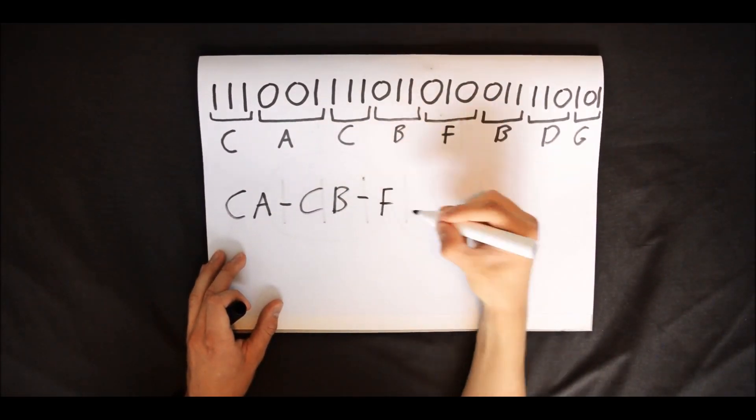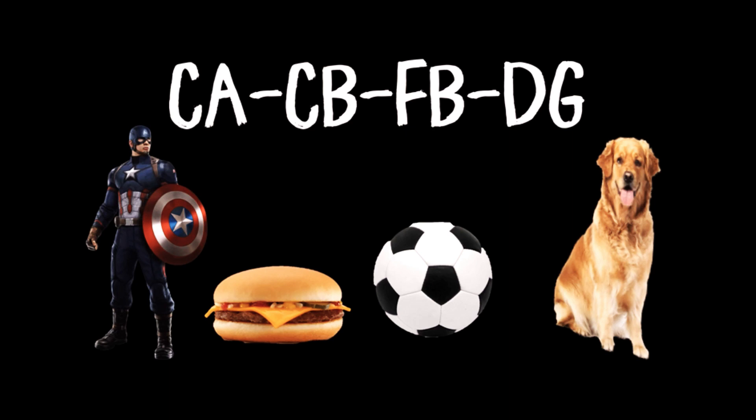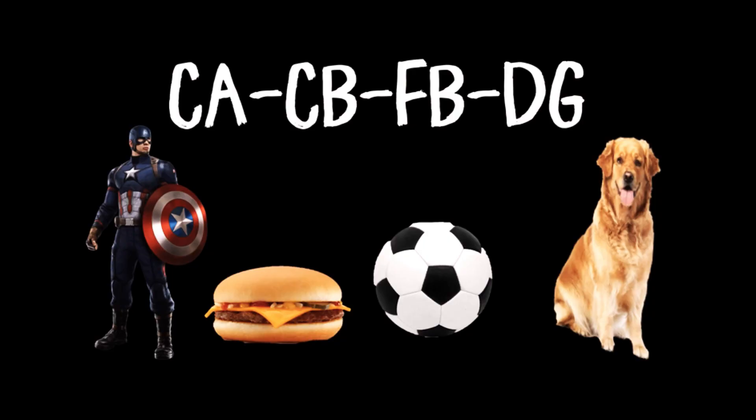So now we're going to use something called letter pair memorization, which is basically memorizing pairs of letters. CA makes me think of Captain America because of his initials. CB makes me think of cheeseburger for obvious reasons. FB makes me think of a football, and finally DG makes me think of a dog because D and G are the first and last letters of the word dog. So now I just create a mental image using those four things — Captain America eating the cheeseburger, with a football in the scene, and a cute little dog staring at the football because it wants to play with it, as dogs do.